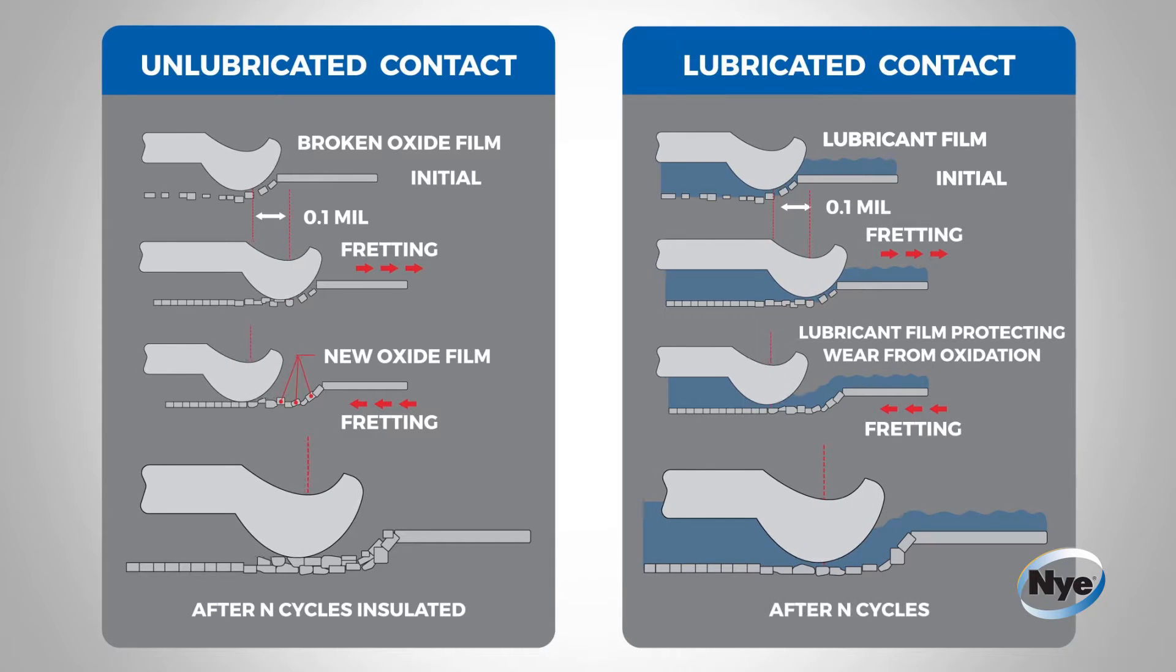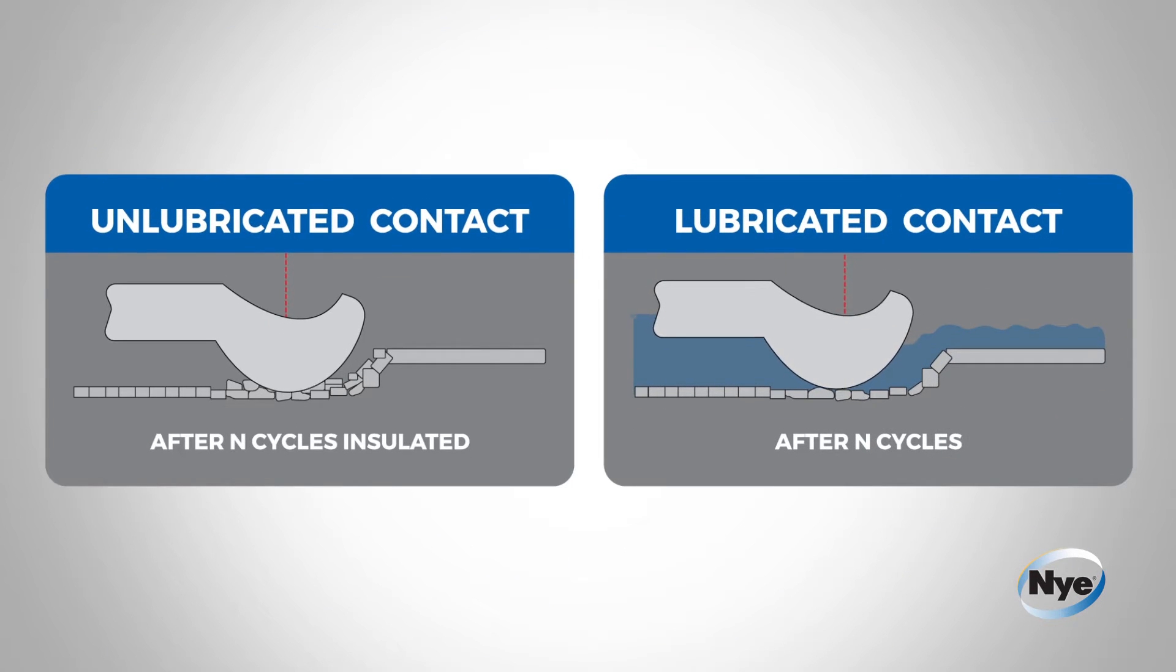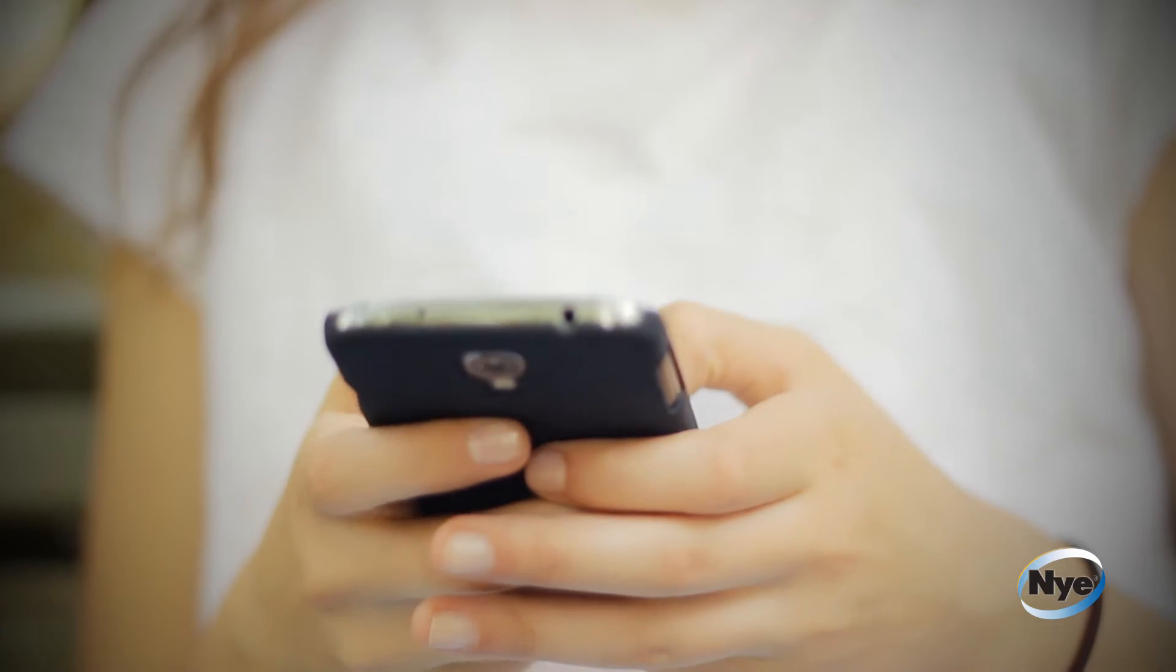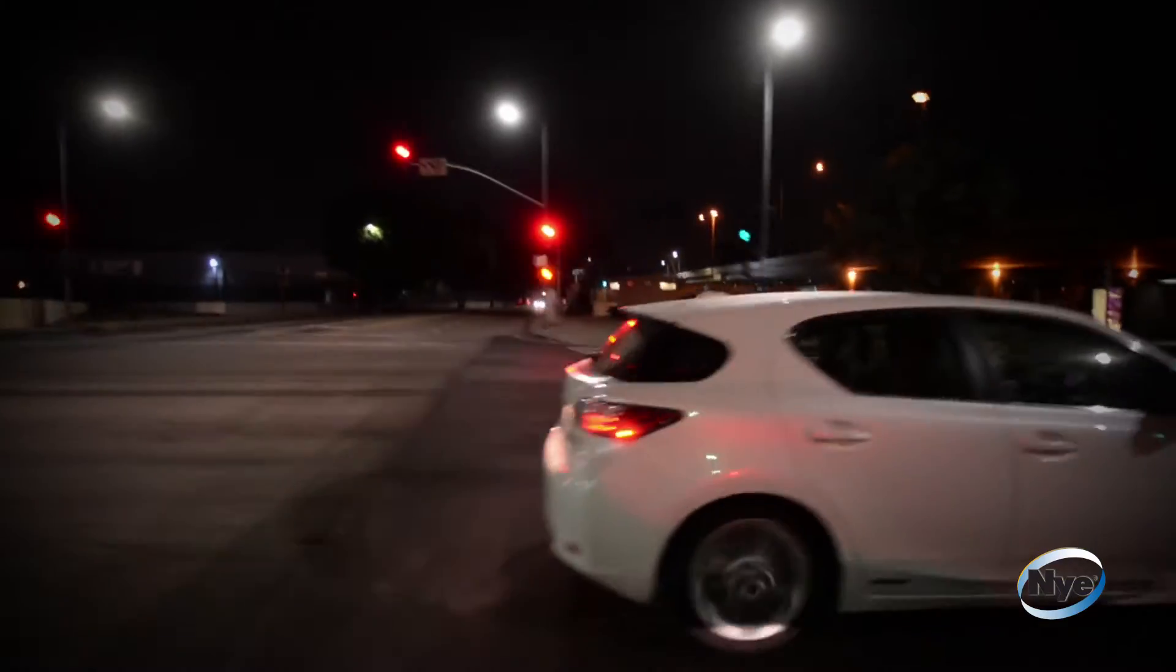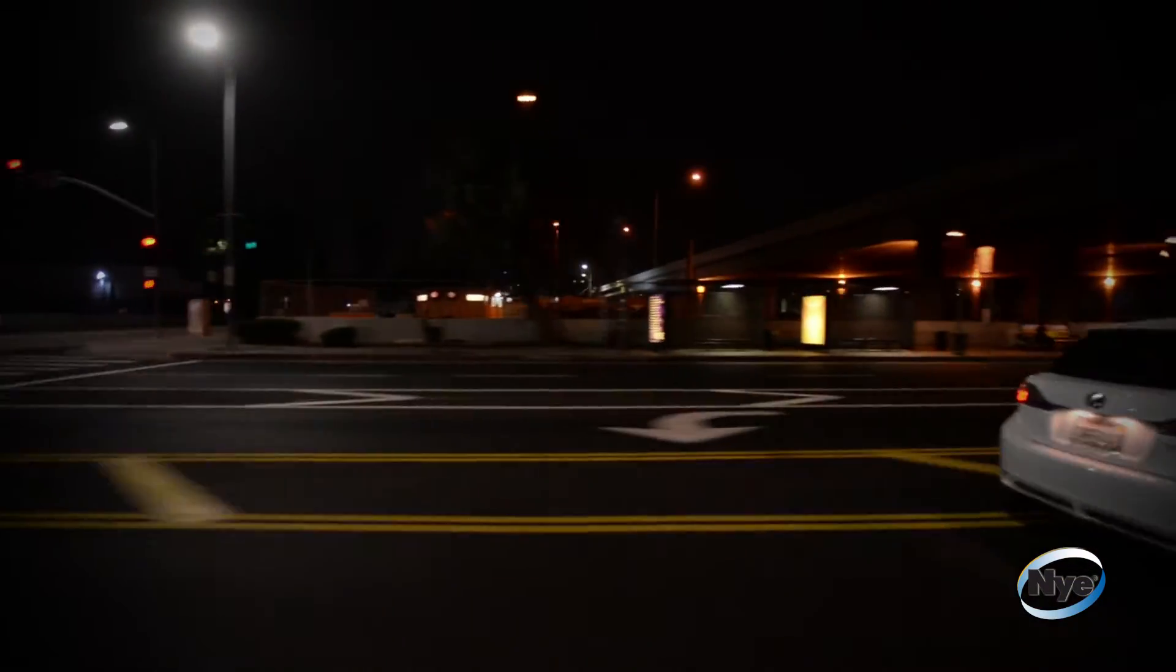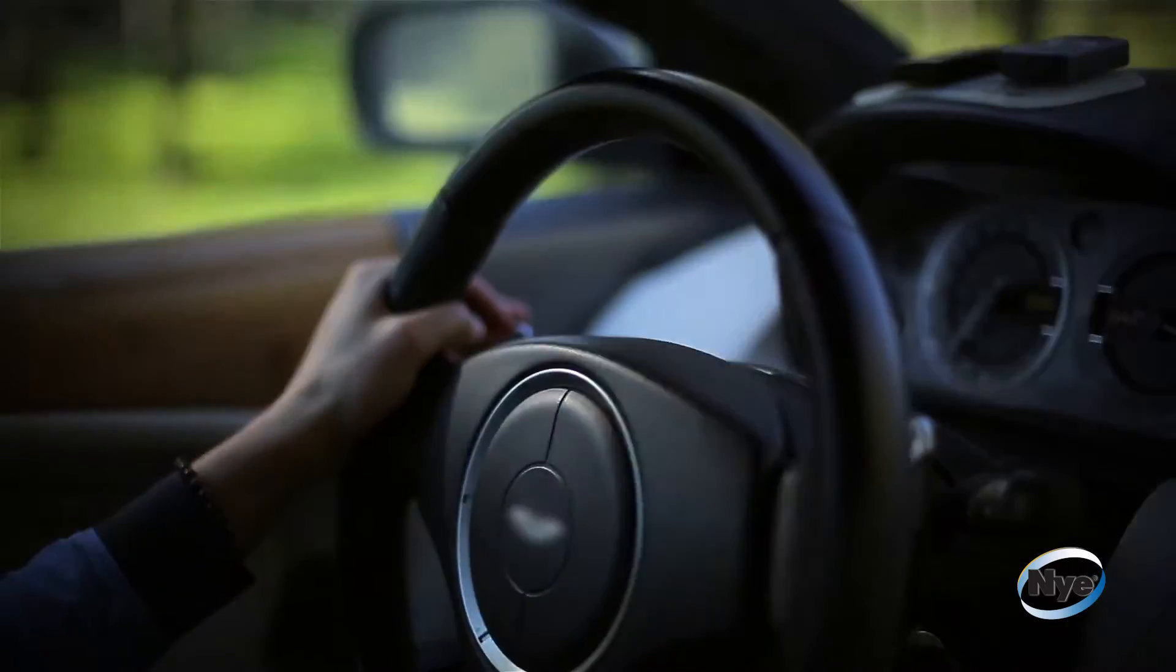Fretting wear is one of the major forms of deterioration and failure in a variety of industries including automotive, aerospace, and consumer electronics. Research has shown that over 60% of the electric problems in cars are directly related to fretting wear.